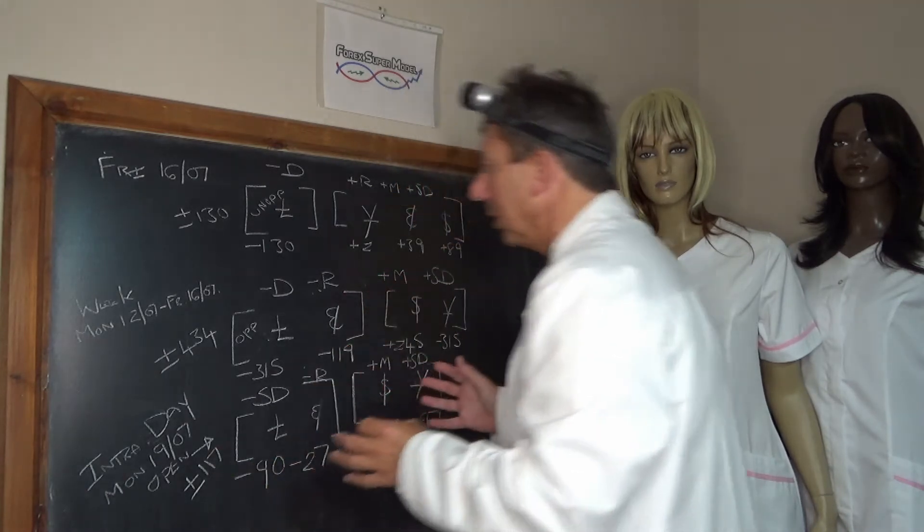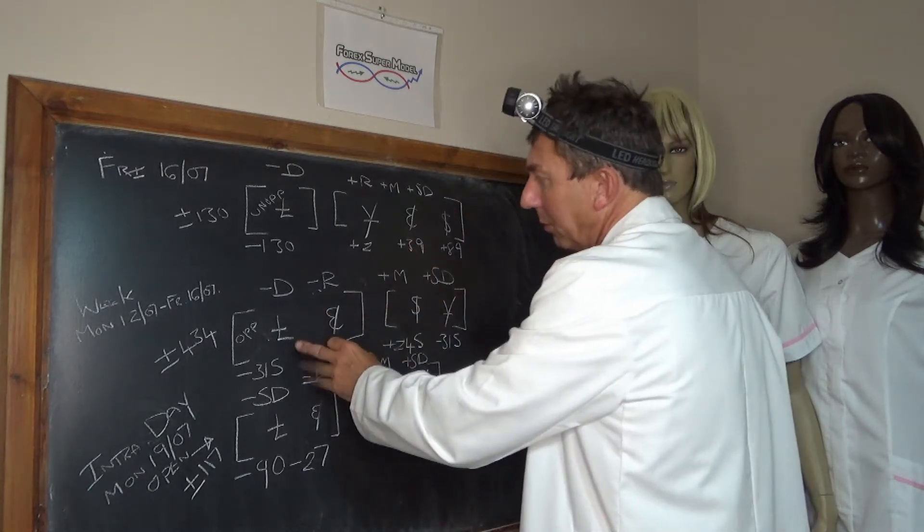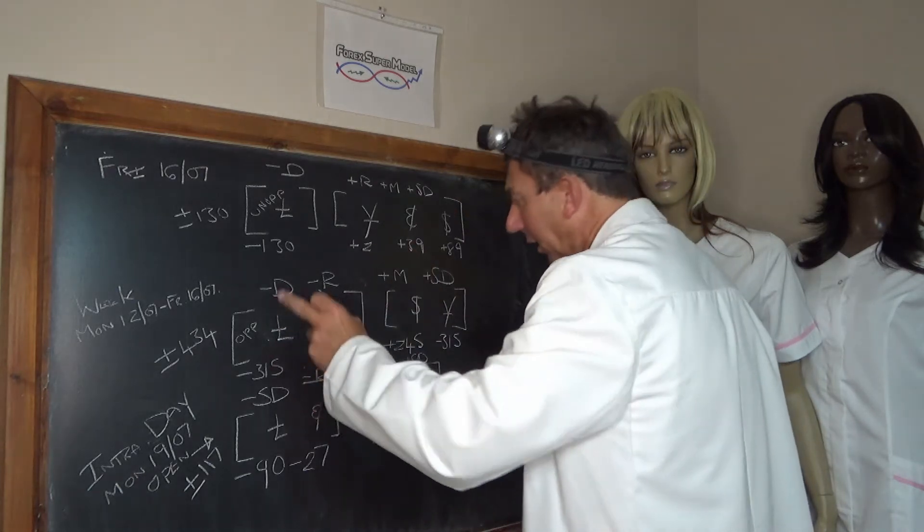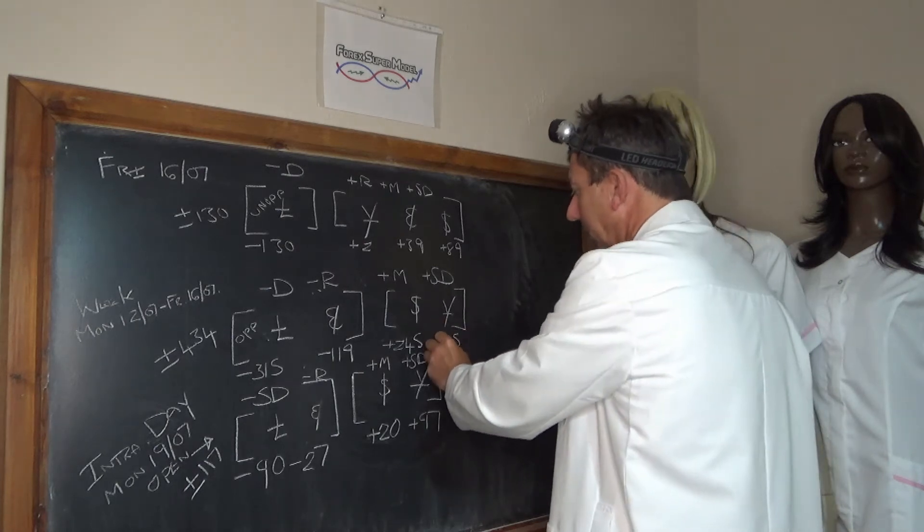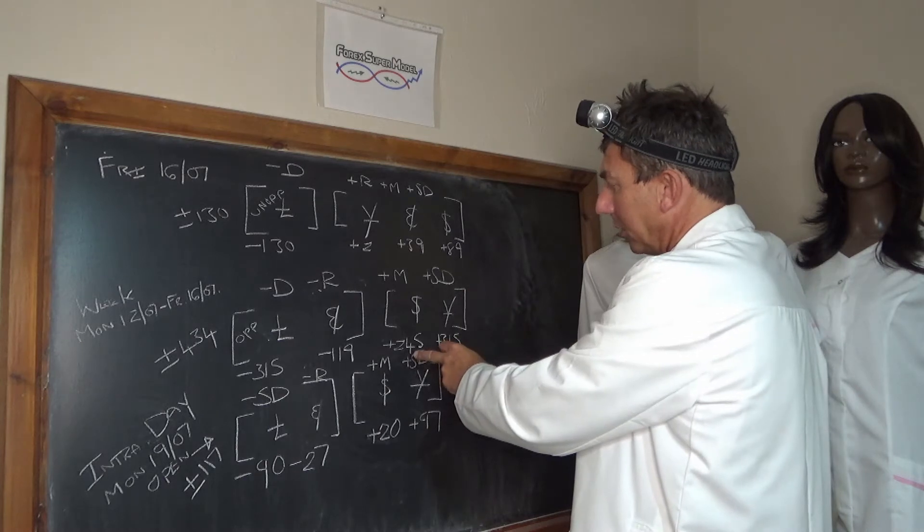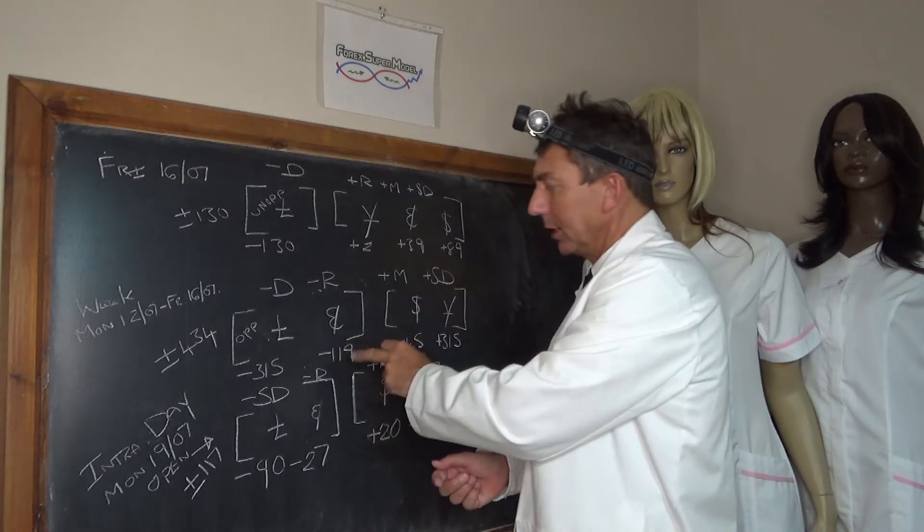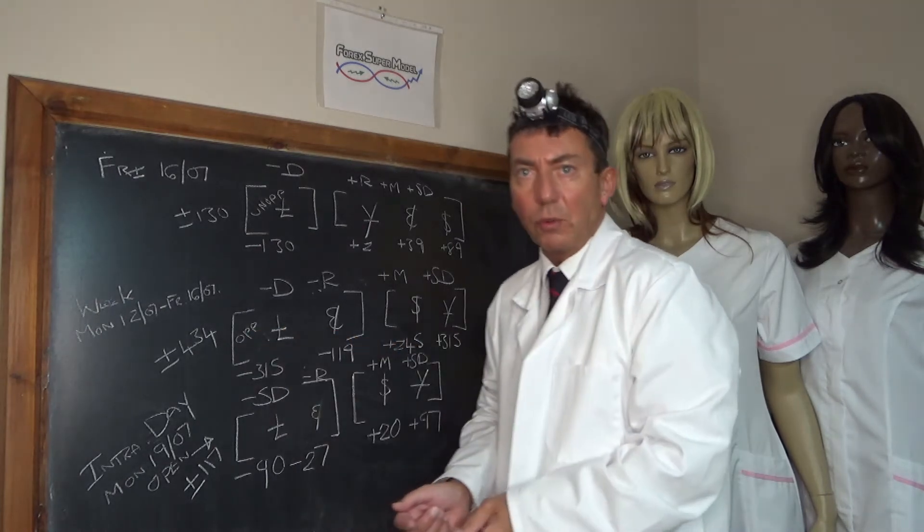Last week, just to remind you, this was from Monday the 12th to Friday the 16th, we had a negative opposed driver in the pound at minus 315. Front and backdoor flows mainly going into the yen at plus 315, into the dollar at plus 245, and the euro was the negative rock at minus 19, activity plus or minus 434.